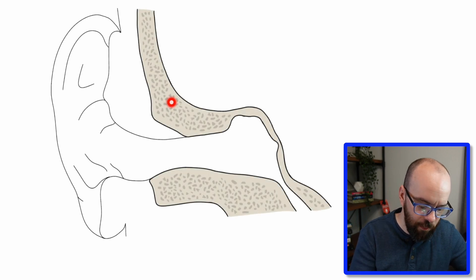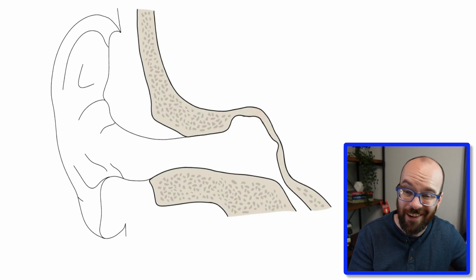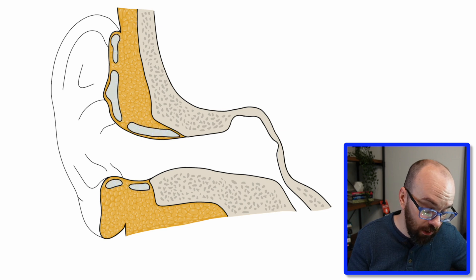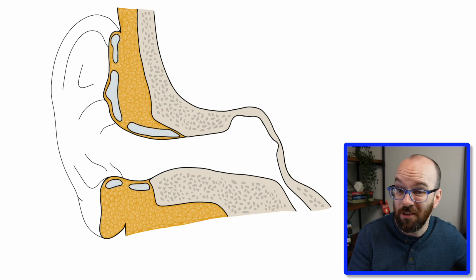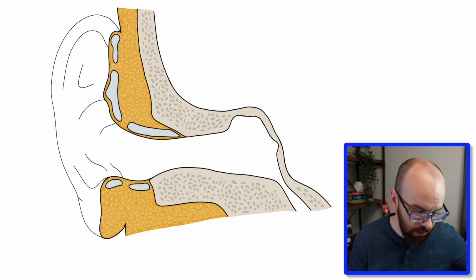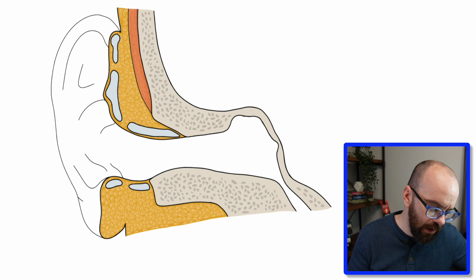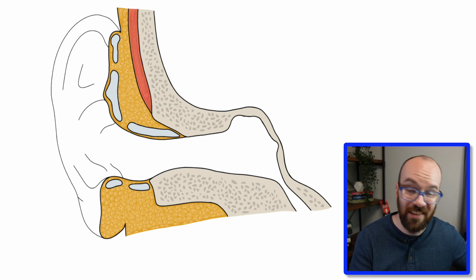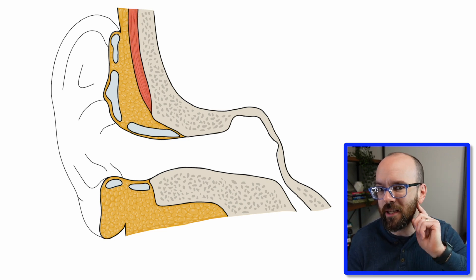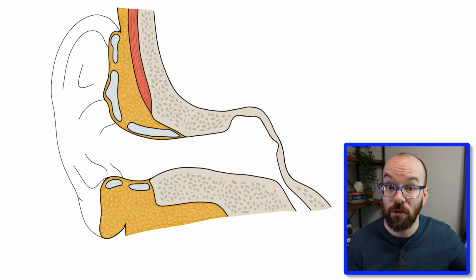Let's start with an outline of the ear, including the outer part as well as the internal structures. First, we have some bone — that's part of the skull. We've got a layer of fat, some cartilage — a lot of your outer ear is made of pieces of cartilage — and then a muscle called the temporalis muscle, which is used to lift up your jaw whenever you're chewing.